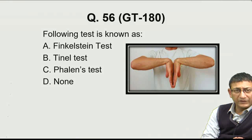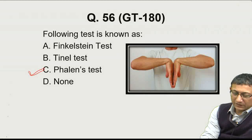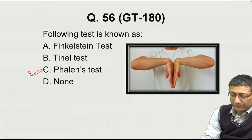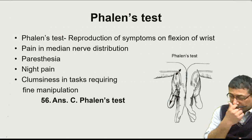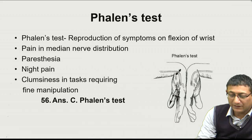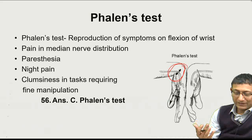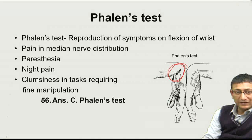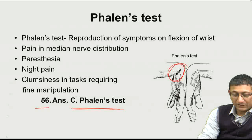Question 56: The following test is known as — this is the Phalen's test, done to reproduce symptoms of carpal tunnel syndrome. Carpal tunnel syndrome is the most common entrapment neuropathy of the median nerve at the wrist, under the flexor retinaculum. The wrist is flexed at around 90 degrees to compress the median nerve and reproduce symptoms in the lateral three and a half fingers — paresthesia and weakness of the thenar muscles. The answer to question 56 is C.